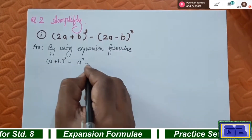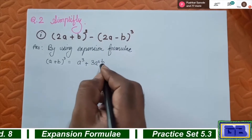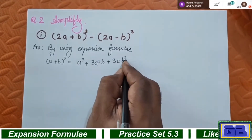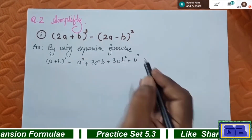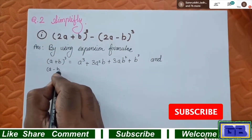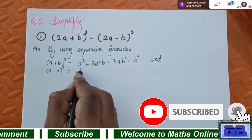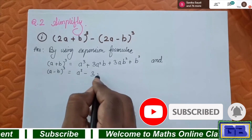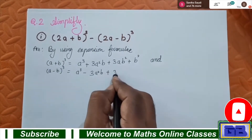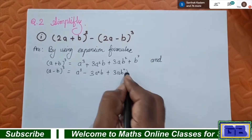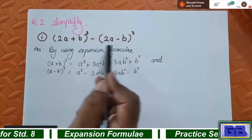By using expansion formulae, write down: (a + b)³ = a³ + 3a²b + 3ab² + b³, and (a - b)³ = a³ - 3a²b + 3ab² - b³.